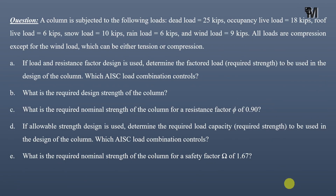Hello and welcome back to Master Civil Engineering. In this video, you will learn how to find the critical or design load for a column according to the AISC load combinations when multiple loads are acting on a column. We will find this critical load both for the LRFD design and for the ASD design. A column is subjected to the following loads: dead load 25 kips, occupancy live load 18 kips, roof live load 6 kips, snow load 10 kips, and rain load 6 kips.